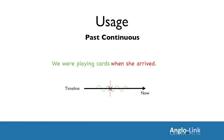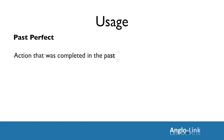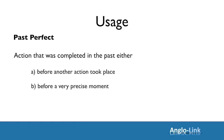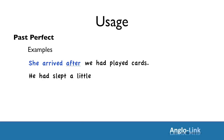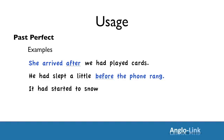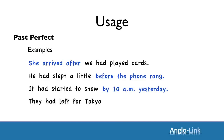Now let's look at the past perfect tense. The past perfect tense refers to an action that was completed in the past, either before another action took place or before a very precise moment. Examples: She arrived after we had played cards. He had slept a little before the phone rang. It had started to snow by 10 a.m. yesterday.